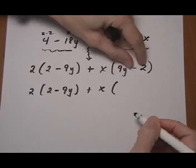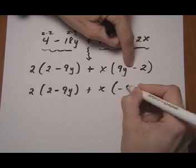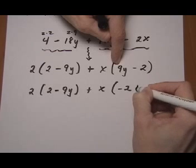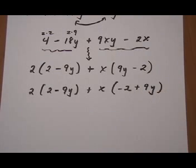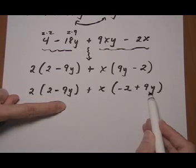And again, I can move terms around as long as I keep the sign in front of it. So if I move the 2 to the front, the minus goes with it, minus 2. And then 9y going last, and it's a positive. So I'm going to say plus 9y. Alright, now they're in the same order. 2, 9y.